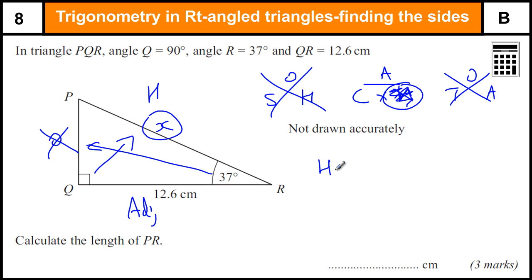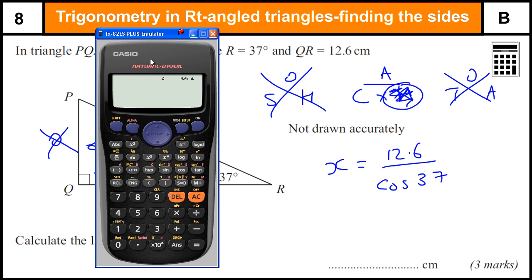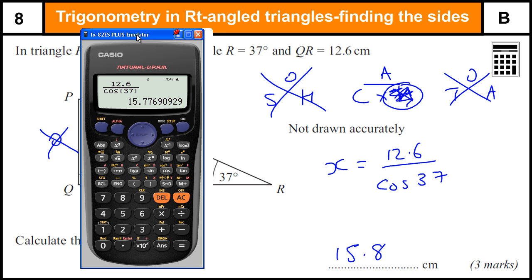So the hypotenuse, which is X, equals the adjacent, which is 12.6 over the cos of angle 37. We just type that straight into the calculator: 12.6 over cos 37, close the bracket. We get 15.8, three significant figures.